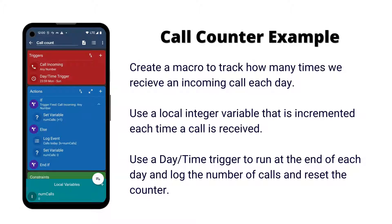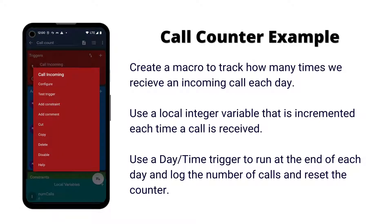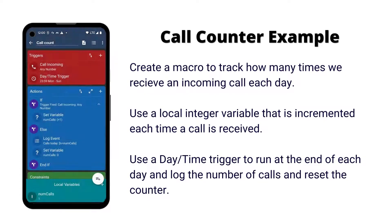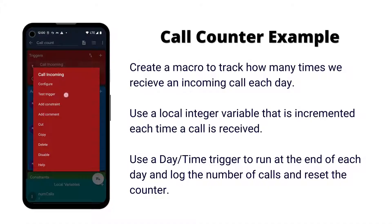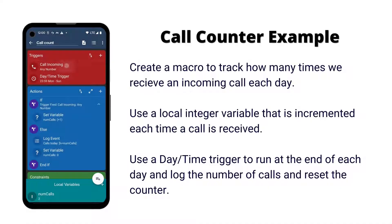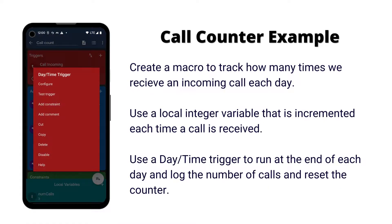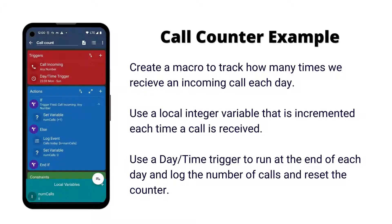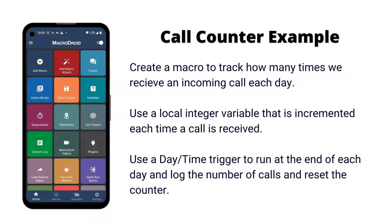When we test the incoming call trigger, the local variable can be seen to increase. When we test the daytime trigger, the value resets to zero and we will see an entry in the user log.